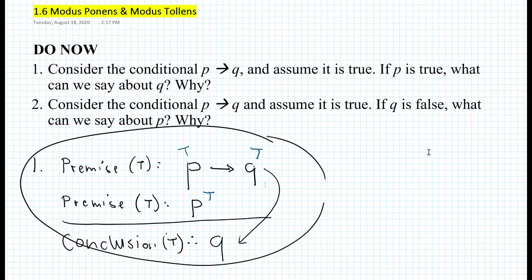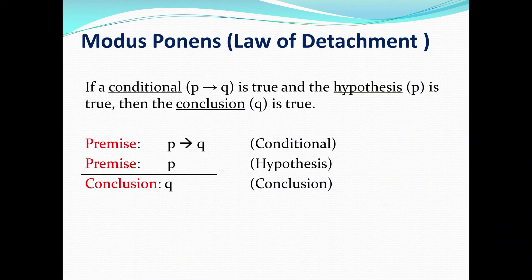It turns out that this is actually called modus ponens, also called the law of detachment. It states the following: if a conditional if P then Q is true, and the hypothesis P is true, then the conclusion Q is true. So it's very important to know that P has to be true.